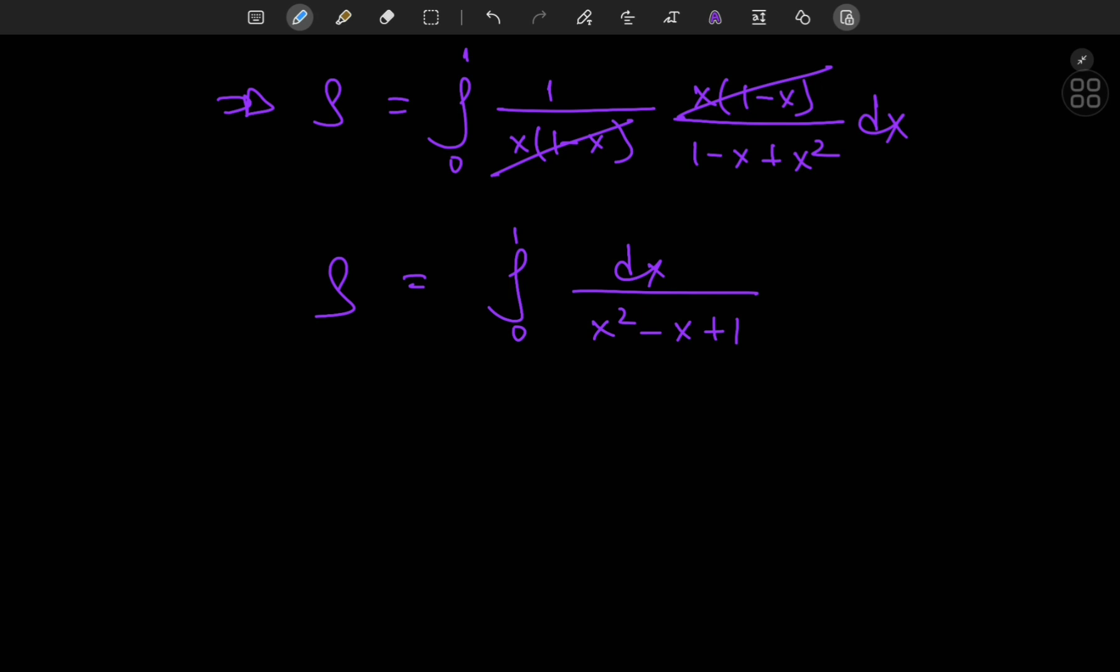Anyway, so we have this integral and all I need to do is play around with the denominator. Integral from 0 to 1, dx divided by x squared minus, I need a 2 here.